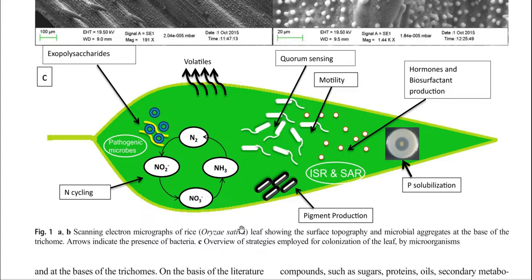Furthermore, organisms present in the phyllosphere can cause biocontrol activity mainly by inducing systemic resistance — that is, induced systemic resistance (ISR) and systemically acquired resistance (SAR) — on the leaf system, thereby protecting against pathogenic organism entry into the plant system. Some microbes present on the leaf surface have the ability to produce phytohormones, as already discussed. Methylobacterium has the ability to produce the phytohormone cytokinin, which has a lot of function in cell enlargement in the plant system.